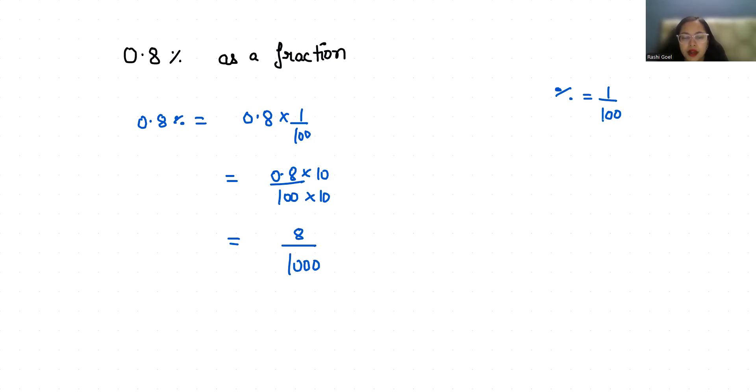But we are going to reduce it by dividing it by 2. So it gave us 4 and here 500, again with 2. It gave us 2 by 250 and again with 2. It gave us 1 by 125.